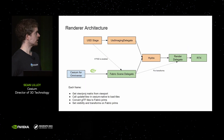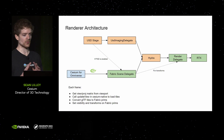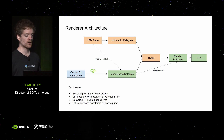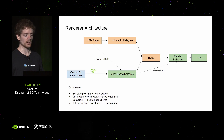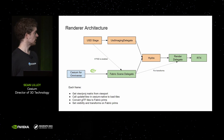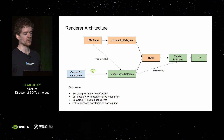Looking at the render architecture: because 3D Tiles packages GLTF, we have to go from GLTF into a renderable form. We have parallel tracks — the USD stage where all design models go, and Cesium for Omniverse handling GLTF using the lower-level Fabric Scene Delegate inside Omniverse, which is a post-composed version of the stage that's very efficient. In the end, that goes to Hydra, then to the render delegate, then to RTX. On a frame-by-frame basis, we get the viewport projection matrices, call update view in Cesium Native to determine which tiles to select, convert GLTF to Fabric prims, and then set visibility and transforms on those prims.